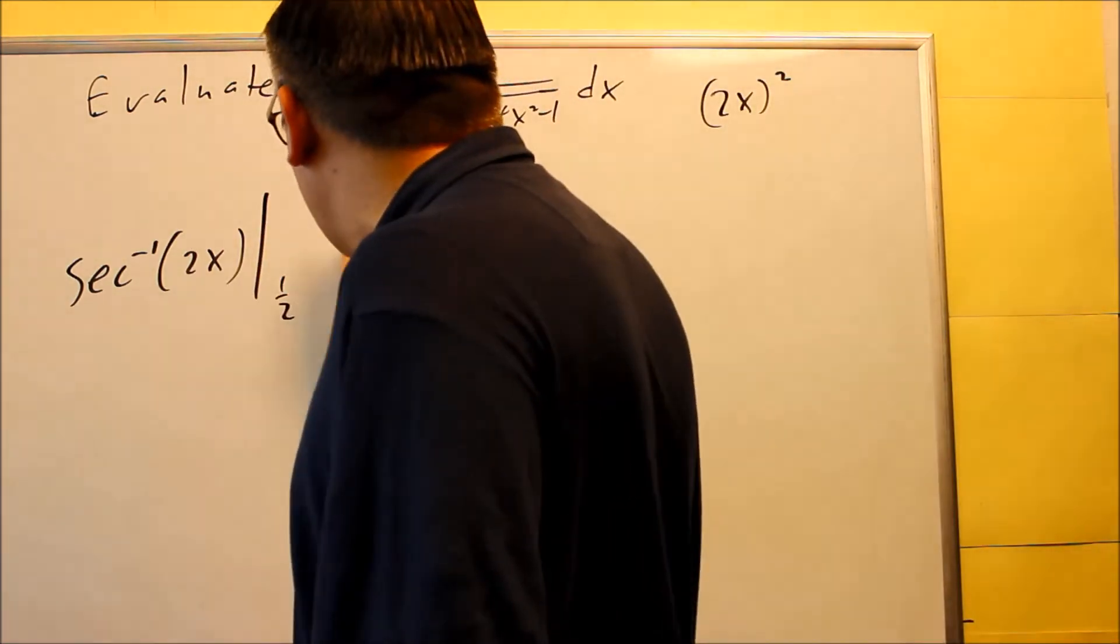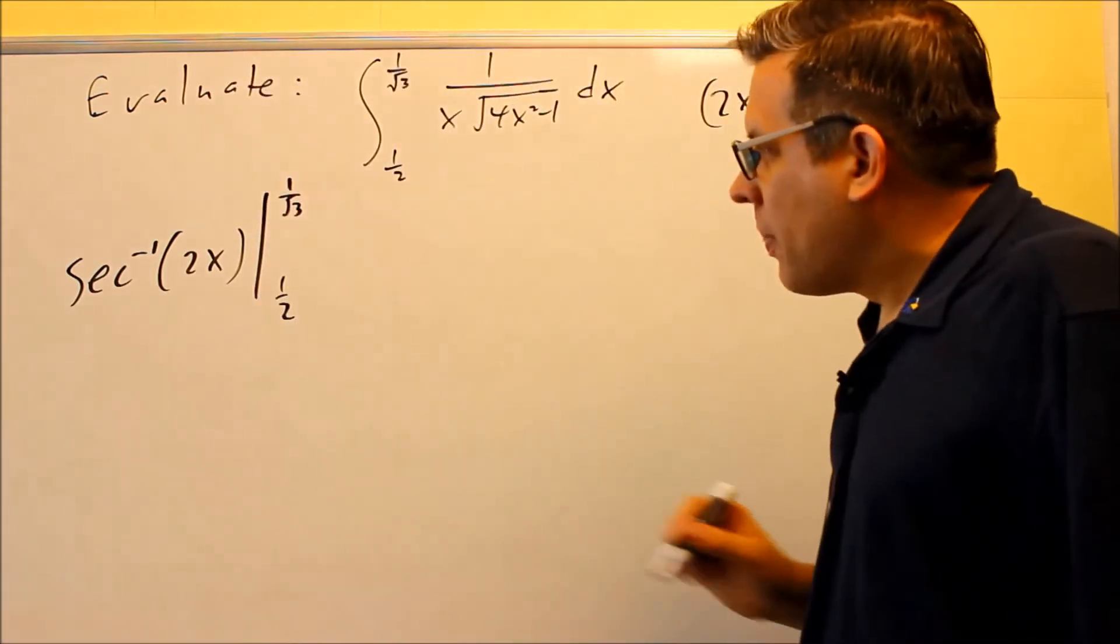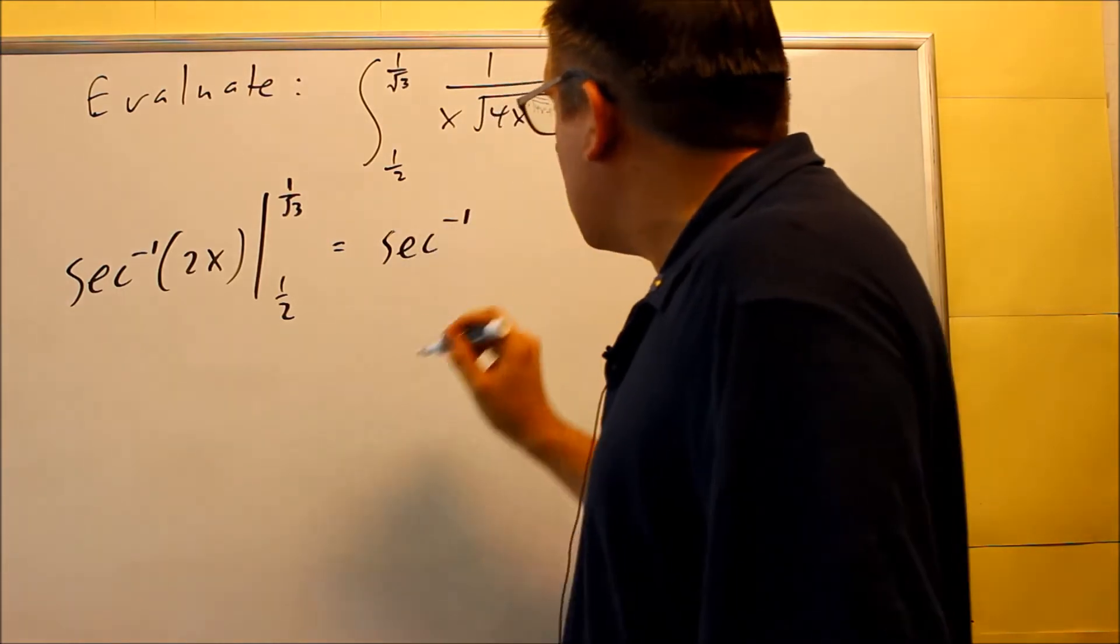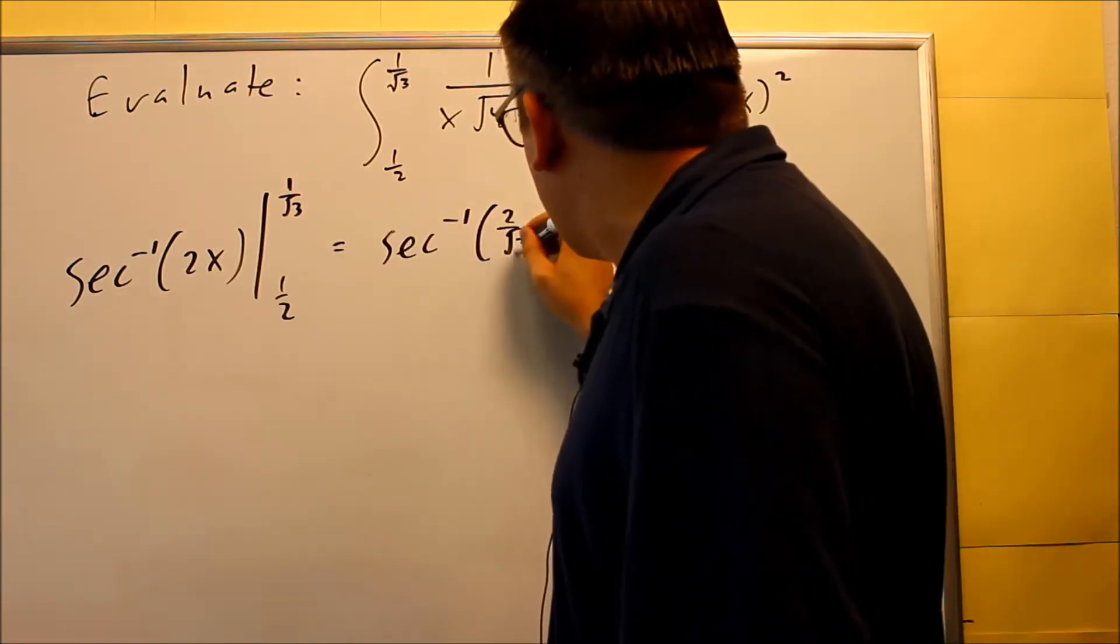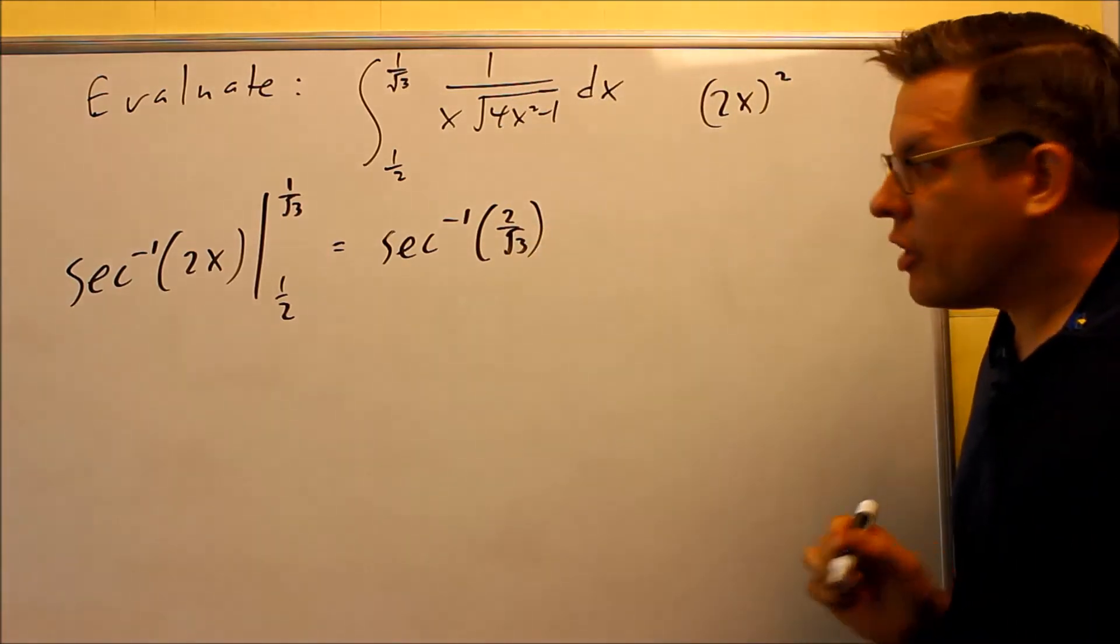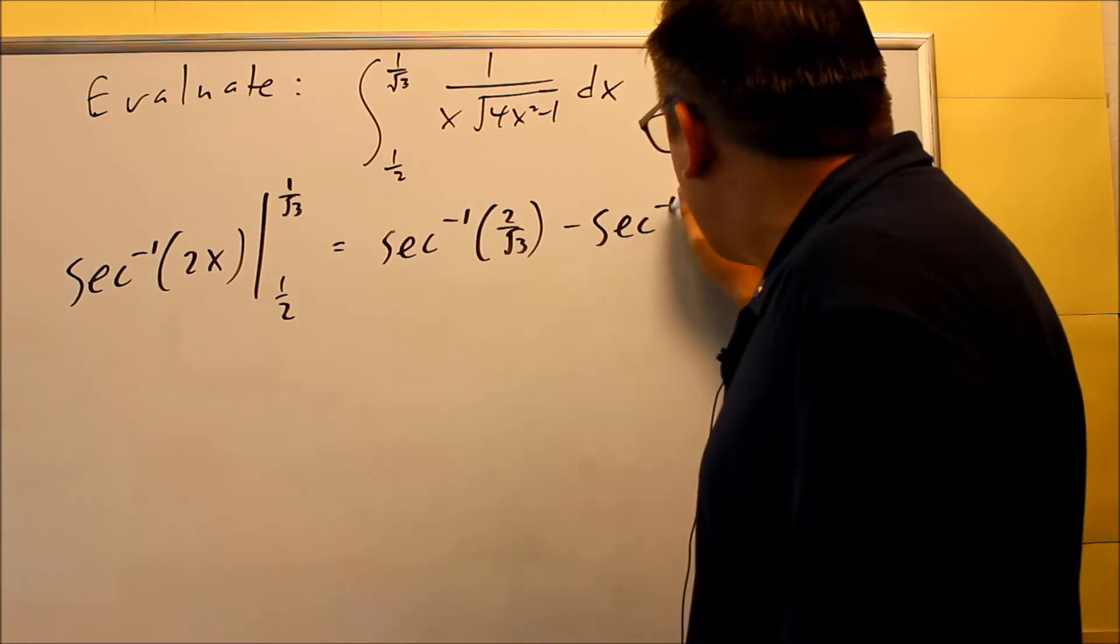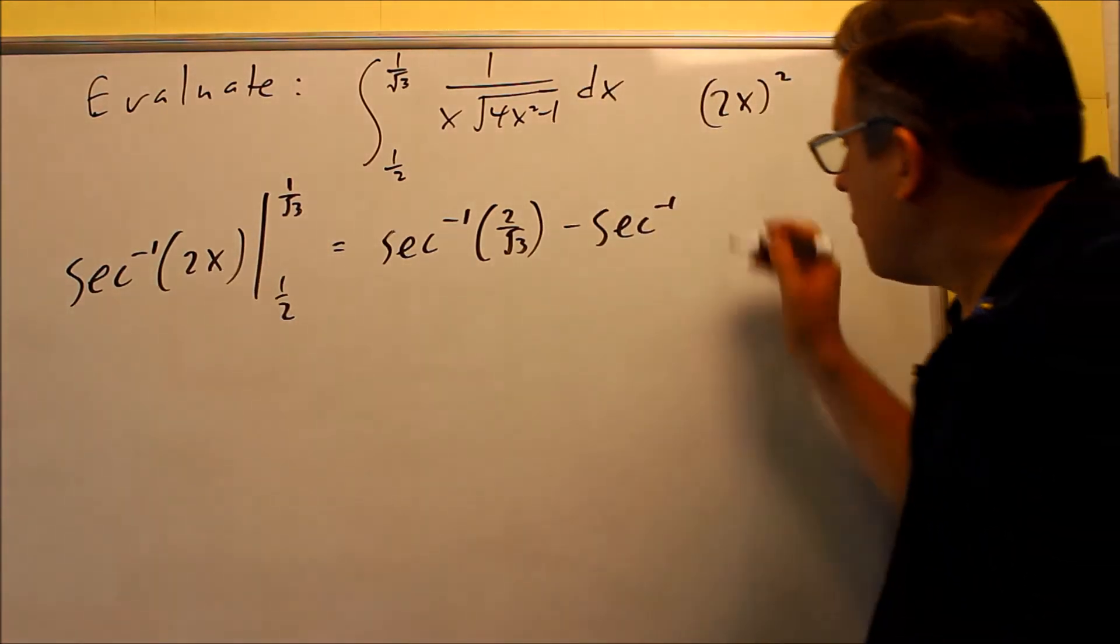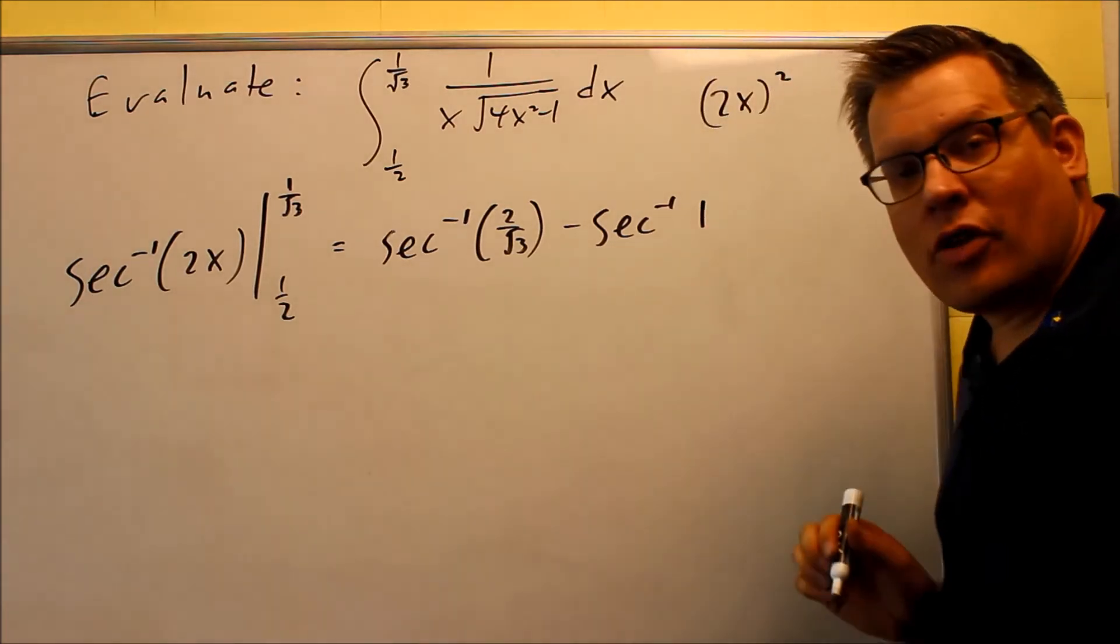We're still putting in our numbers, 1 half and 1 over root 3. When we put that in, you're going to get inverse secant. We're going to do 2 times that one, so you'll get 2 over root 3 because this multiplies by 2. And minus inverse secant of 1 half times 2, which means that you're just going to get a 1 inside here. So now it's just a matter of looking at our unit circle.